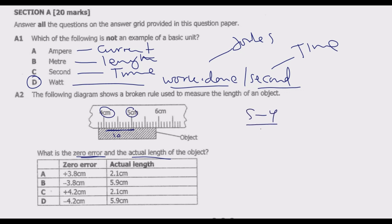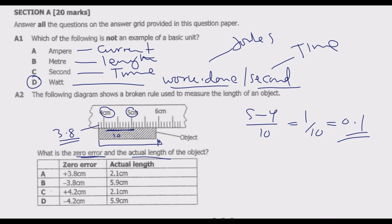So one over ten gives zero point one. Measuring from here, this starting point is below four by 0.2, so the ruler is already starting at 3.8 instead of zero. When there is no zero error the measurement should start from zero, so we have a positive zero error of 3.8.